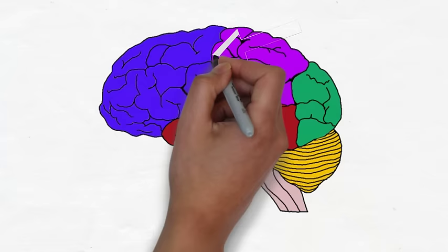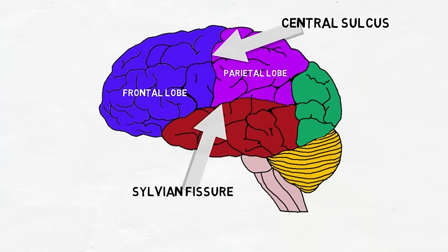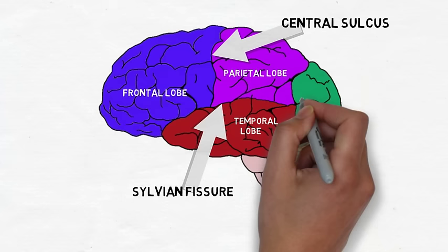This large sulcus is known as the central sulcus. It divides the frontal lobe from the parietal lobe. This sulcus is known as the sylvian fissure, and it separates the temporal lobe from the rest of the cerebral hemisphere. The occipital lobe is found at the back of the brain, but it doesn't have such a clear division separating it from the rest of the brain.